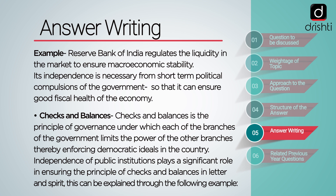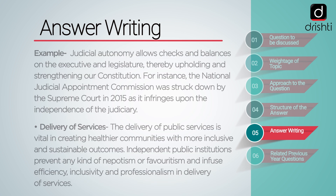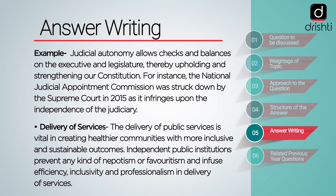Checks and balances is the principle of governance under which each of the branches of government limits the power of the other branches, thereby enforcing democratic ideals. Independence of public institutions plays a significant role in ensuring the principle of checks and balances in letter and spirit. This can be explained through the example of how judicial autonomy allows checks and balances on the executive and legislature, thereby upholding our constitution. For instance, the National Judicial Appointments Commission was struck down by the Supreme Court in 2015, as it infringed upon the independence of the judiciary.